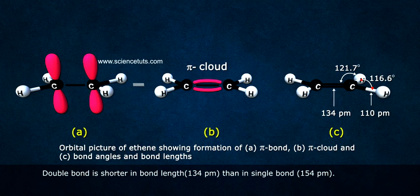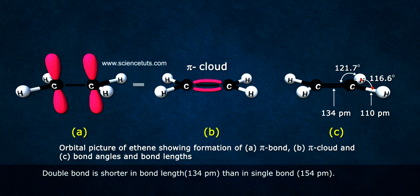Double bond is shorter in bond length, 134 pm, than single bond, 154 pm.